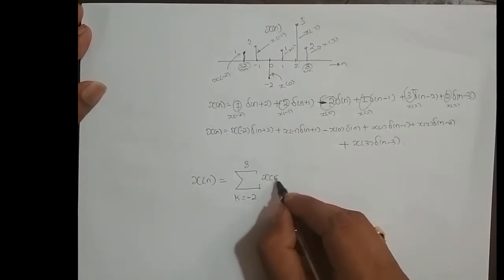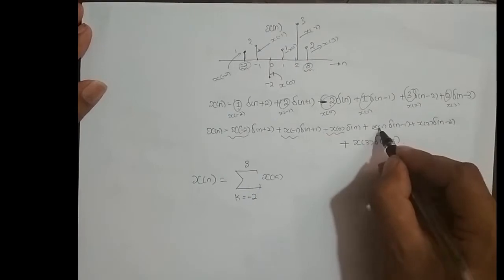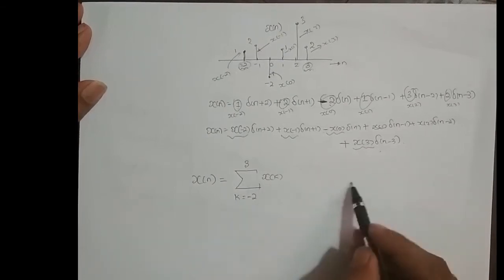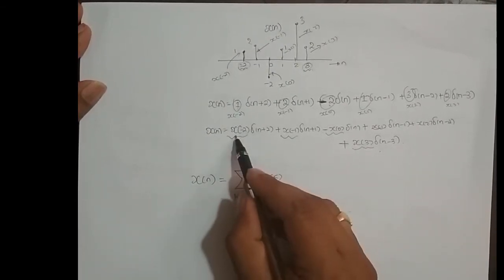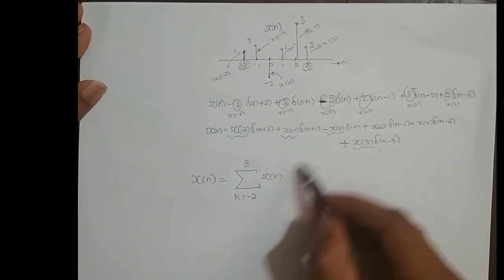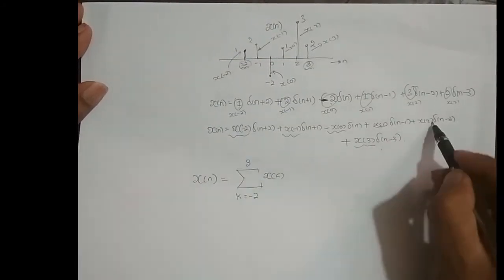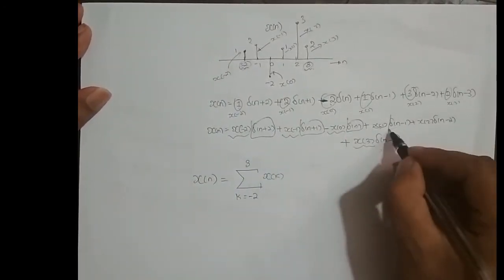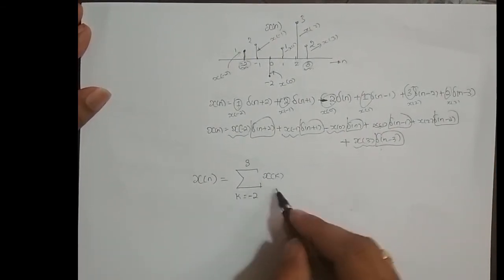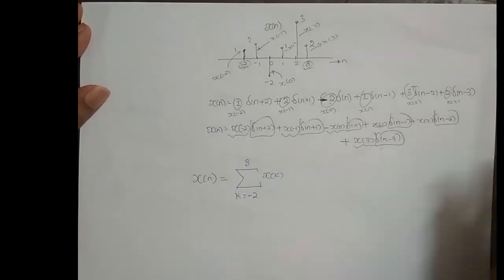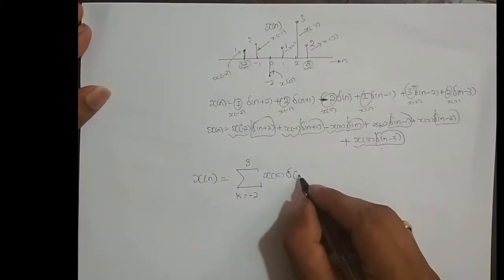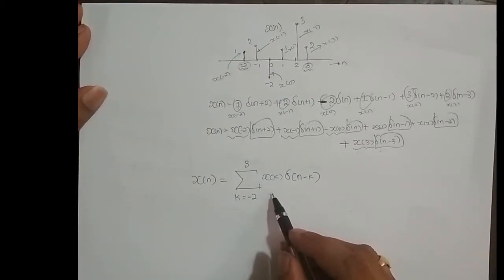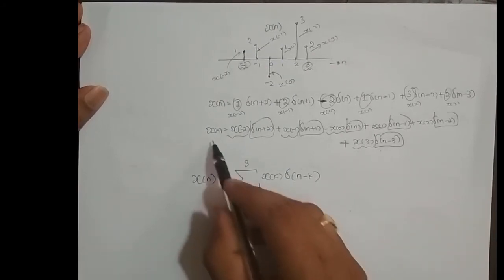Now, we write x of k to address these values — x of 0, x of minus 2, x of minus 1, x of 0, and so on. I can represent the delta functions as delta of n minus k. When I expand this summation, I should get back the original equation. When k equals minus 2, we get x of minus 2 times delta of n minus (minus 2), which is delta of n plus 2. When k equals minus 1, we get x of minus 1 times delta of n plus 1. When k equals 0, we get x of 0 times delta of n.